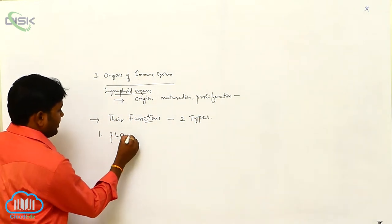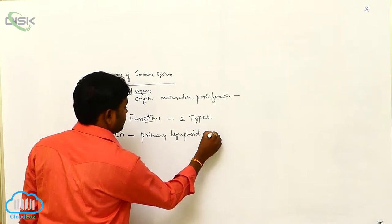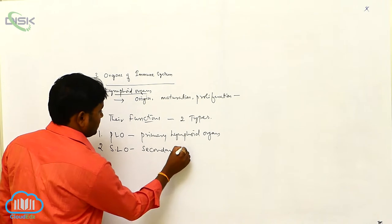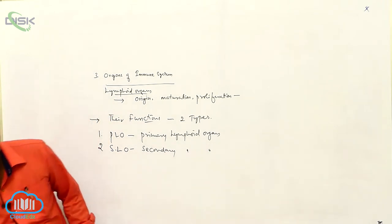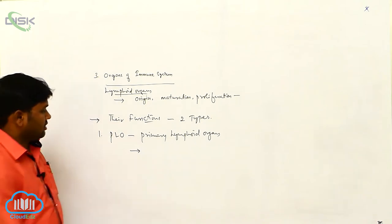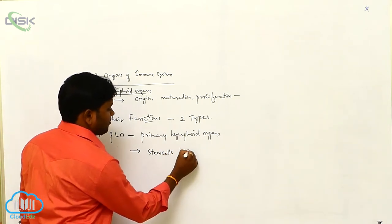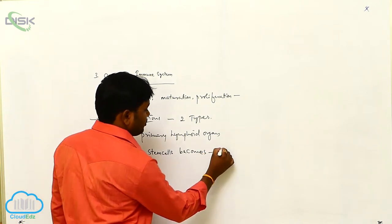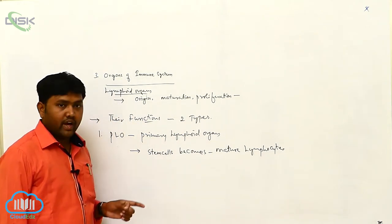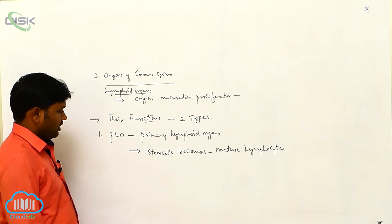The first type is primary lymphoid organs, and the second type is secondary lymphoid organs. Primary lymphoid organs are the organs where stem cells become mature lymphocytes.